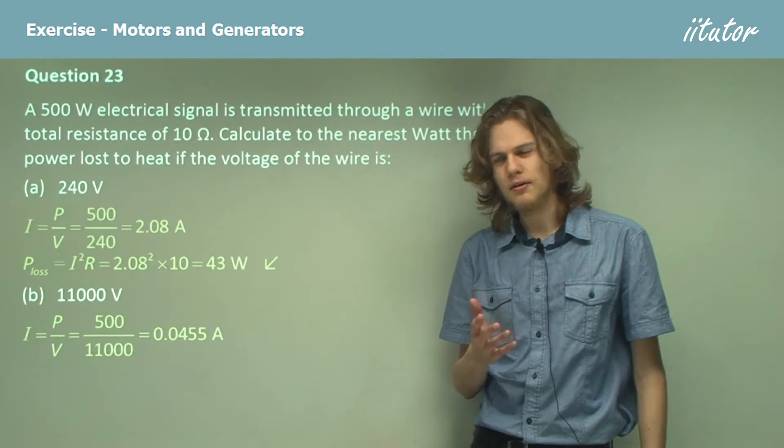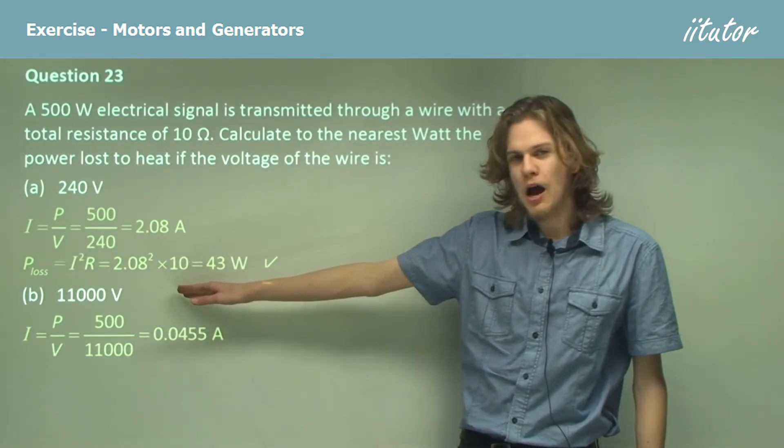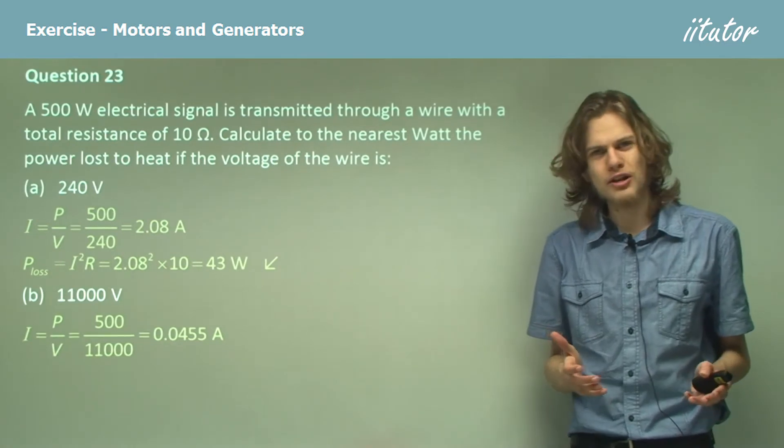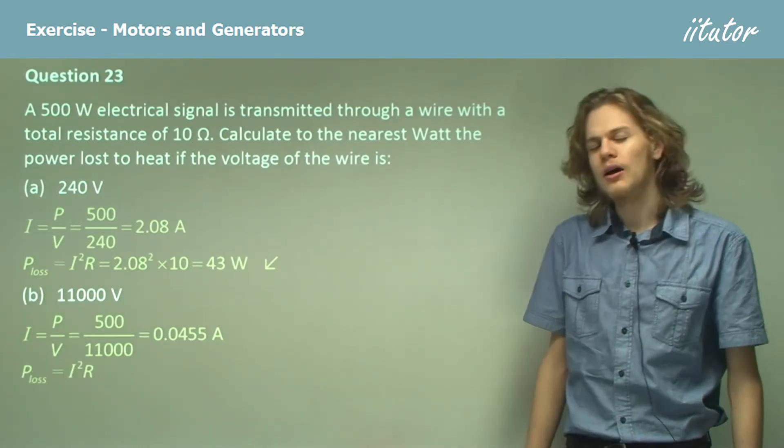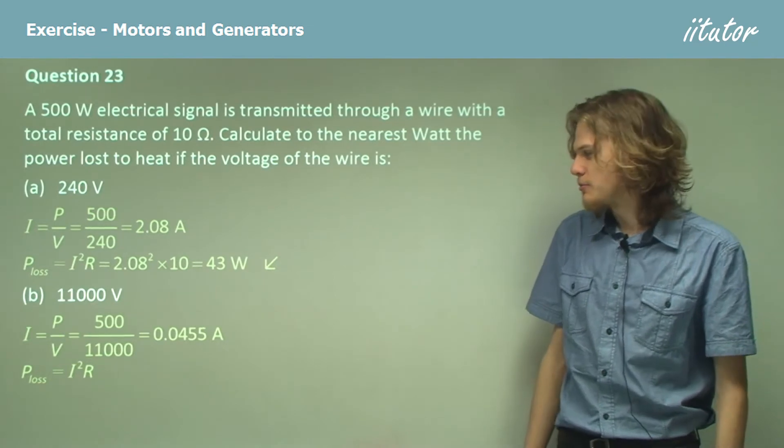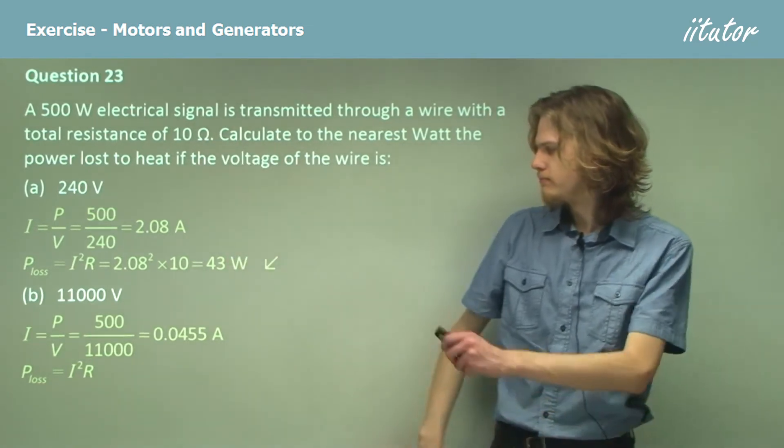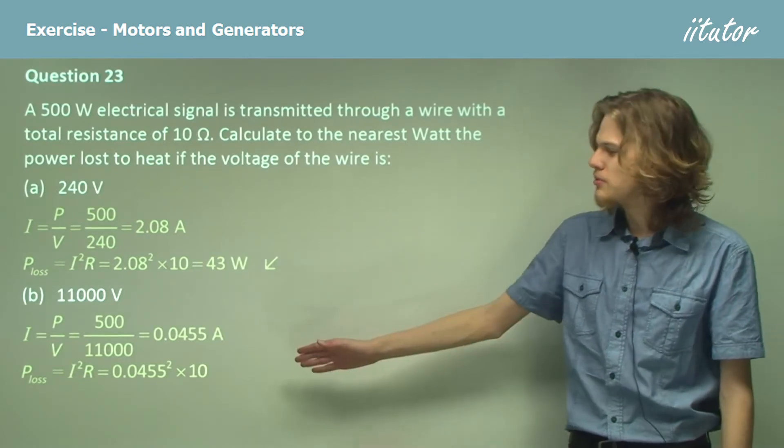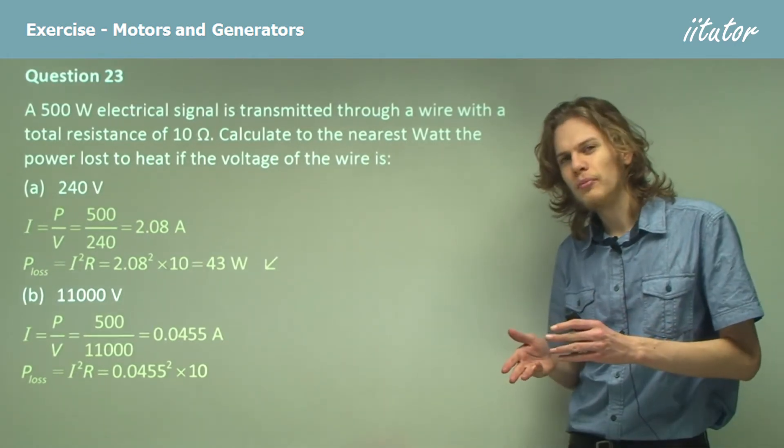Alright, so now that we have the current, we can use our equation for power loss in order to figure out exactly how much energy is irradiated. Power loss equals I squared R. We can substitute in I and R to get 0.0455 squared times 10. Now what happens when you square a very small number, a number that's less than 1?